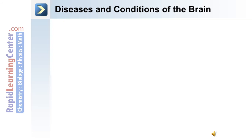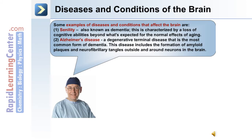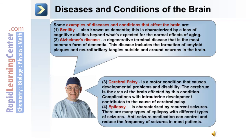The brain and the central nervous system are affected by diseases and conditions. Number one: senility, also known as dementia, characterized by a loss of cognitive abilities beyond what's expected for the normal effects of aging. Number two: Alzheimer's disease, a degenerative terminal disease that is the most common form of dementia. This disease includes the formation of amyloid plaques and neurofibrillary tangles outside and around the neurons in the brain. Number three: cerebral palsy, a motor condition that causes developmental problems and disability. The cerebrum is the area of the brain affected by this condition.